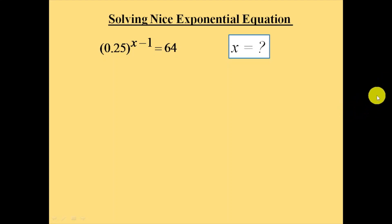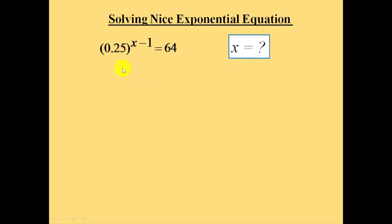Hello everyone. In this session we need to find the value of x, where 0.25 to the power of (x minus 1) is equal to 64. This is the equation provided and we need to find the value of x.